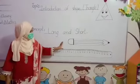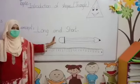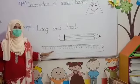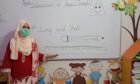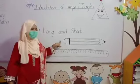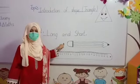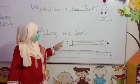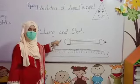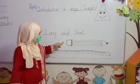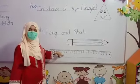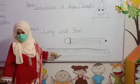The pencil is shorter than the scale. Long means bada (big) and short means chhota (small). Our pencil is smaller than the scale, and the scale is bigger than our pencil.